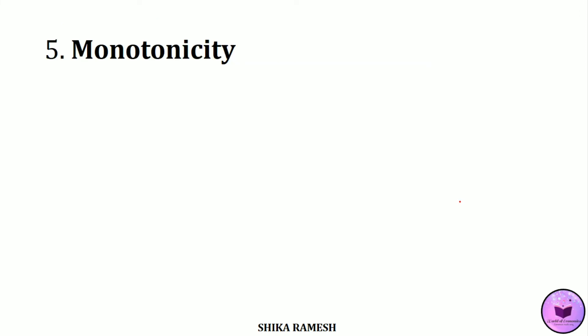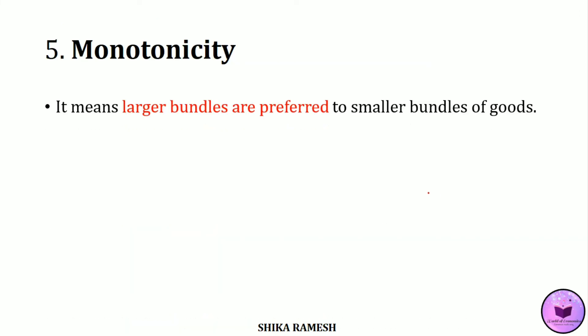The fifth property is monotonicity. It means the consumer always prefers larger bundles to smaller bundles of goods.